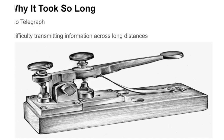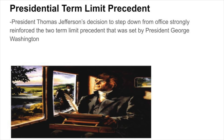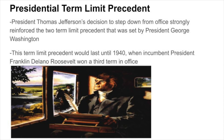The sixth presidential election saw a variety of new candidates compete for the presidency after incumbent president Thomas Jefferson chose to step down from office. Jefferson's decision to step down strongly reinforced the two-term limit precedent set by President George Washington. This term limit precedent would last until 1940, when incumbent president Franklin Delano Roosevelt won a third term in office.